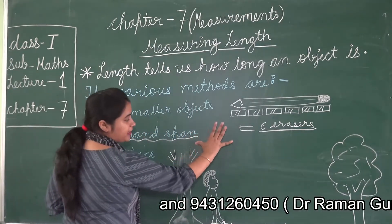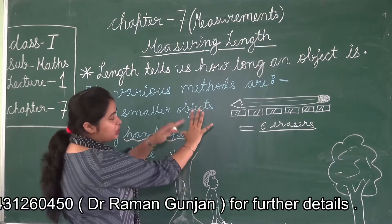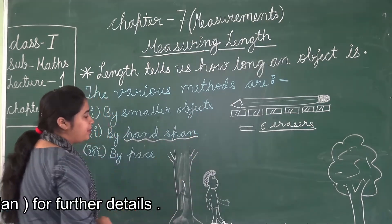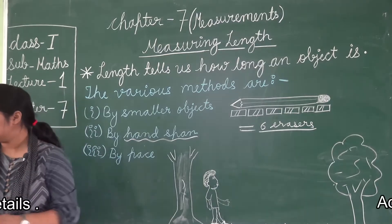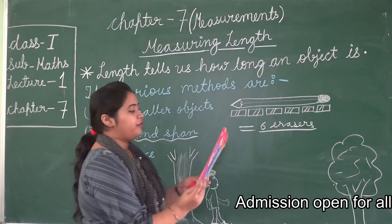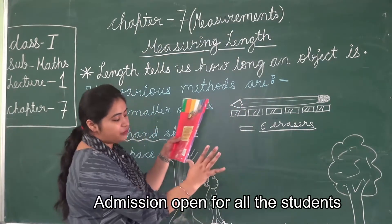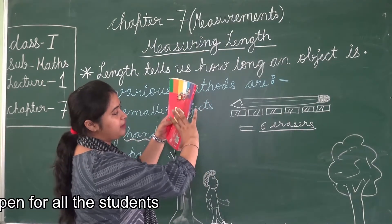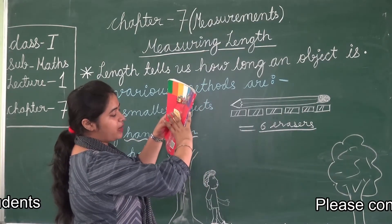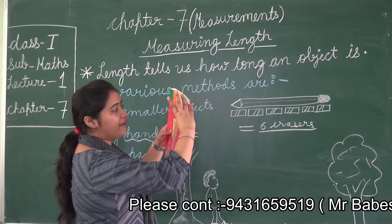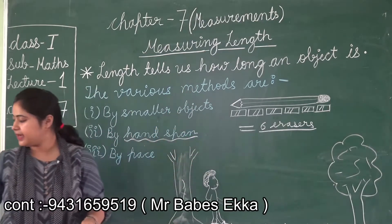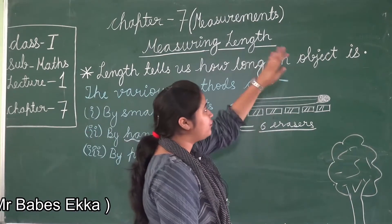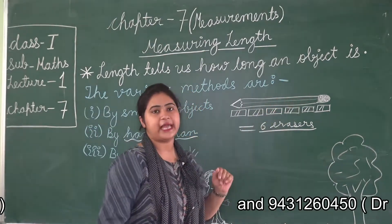Children, this distance from your thumb finger to your last finger is called a hand span. For example, if we have to measure this book with hand span, we keep our thumb here and little finger at the other end. We can see it is one and a half hand spans. So one and a half hand spans is the length of the book. In the same way, you can measure any long object using hand span.